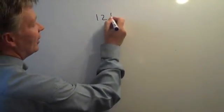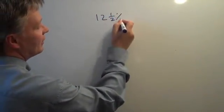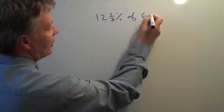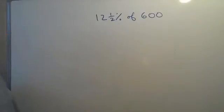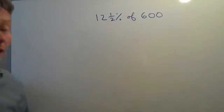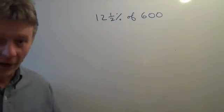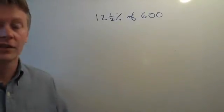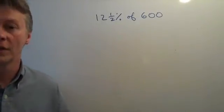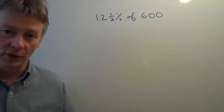So let's say that we have a question which is something like 12.5% of 600. Now what I said in the previous video is that we could convert that 12.5% to a fraction, and then we could use the principle of equivalent fractions in order to reduce the numbers and make them a little bit easier to deal with.